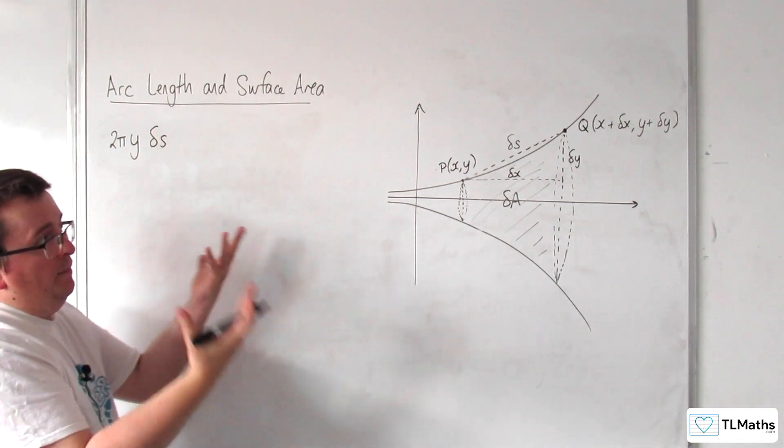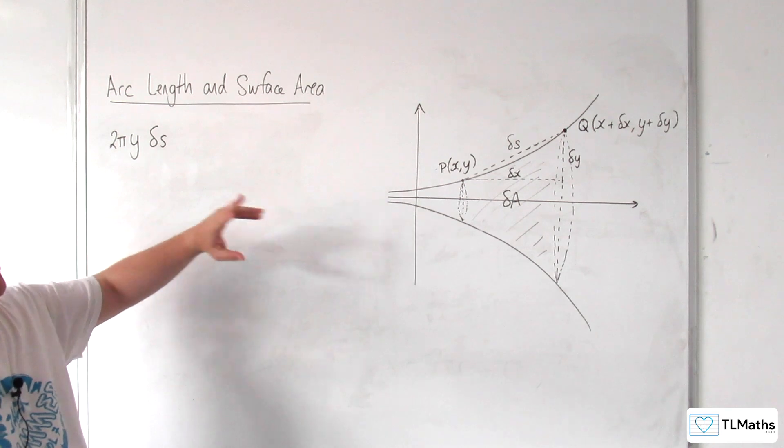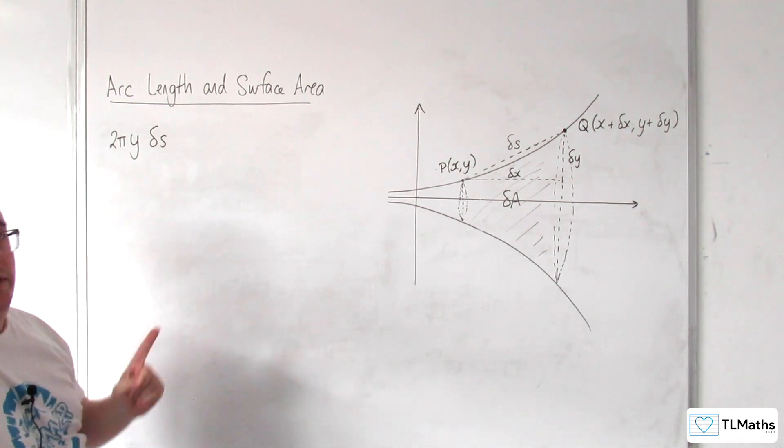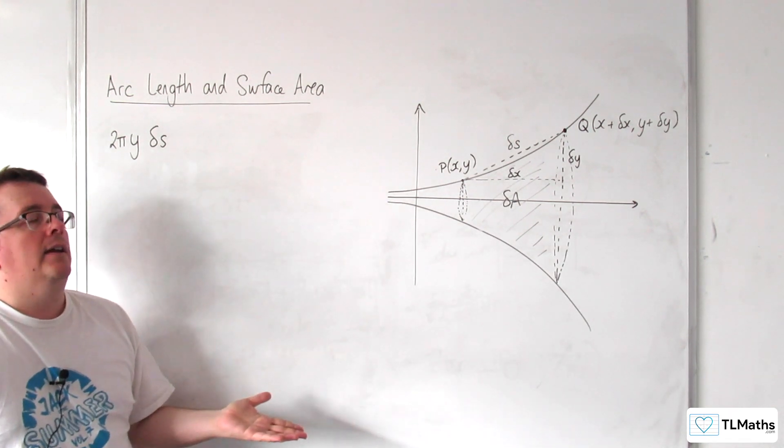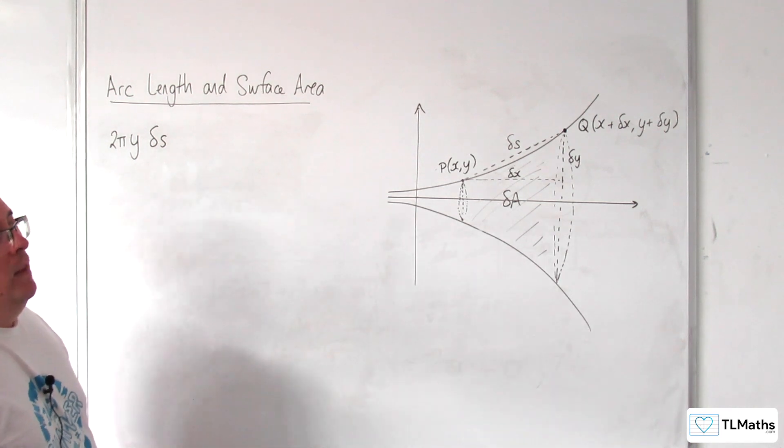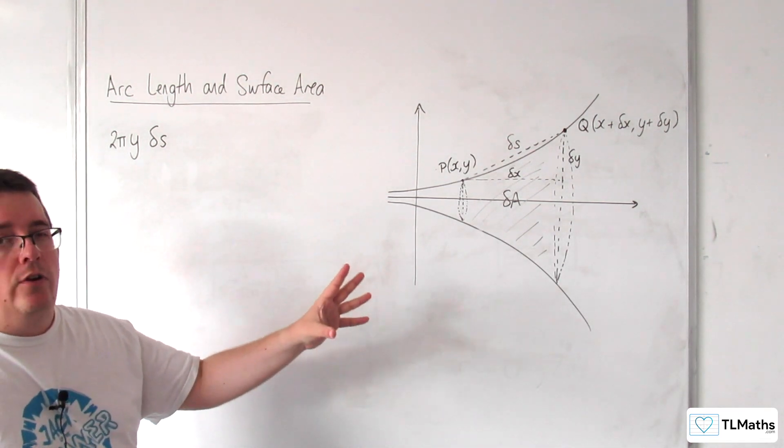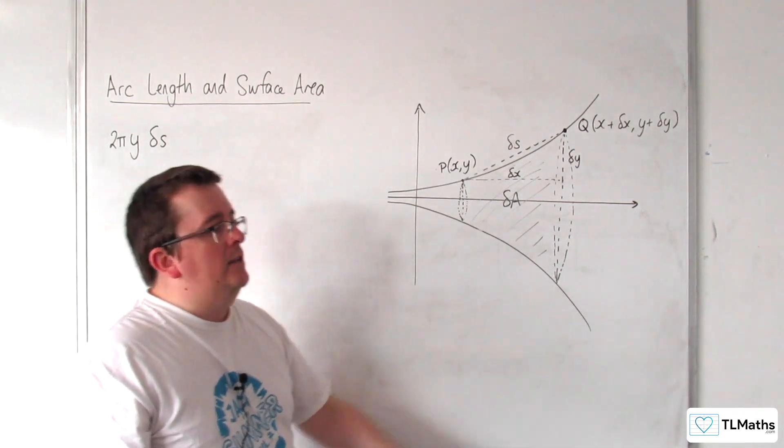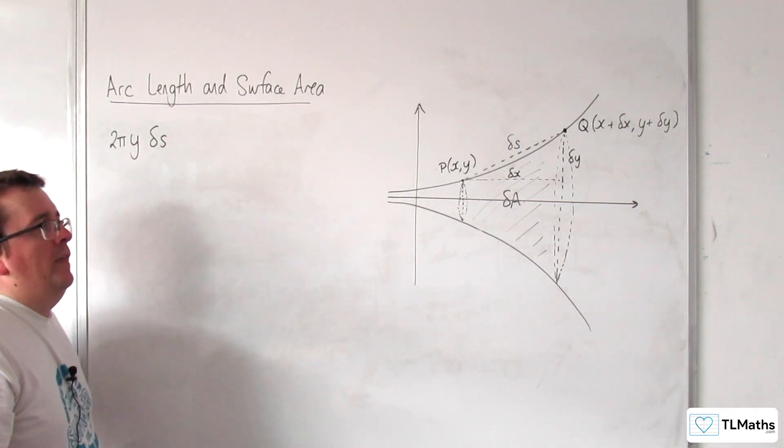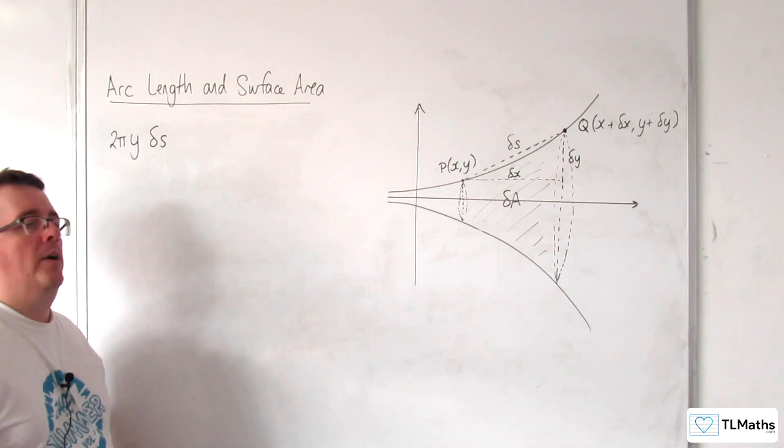Now, given the shape that we have here, if you're a little bit too unsure about why I'm using delta S there rather than say delta X, you might want to look at the formula for the area of a frustum. That's kind of where this is coming from behind the scenes.